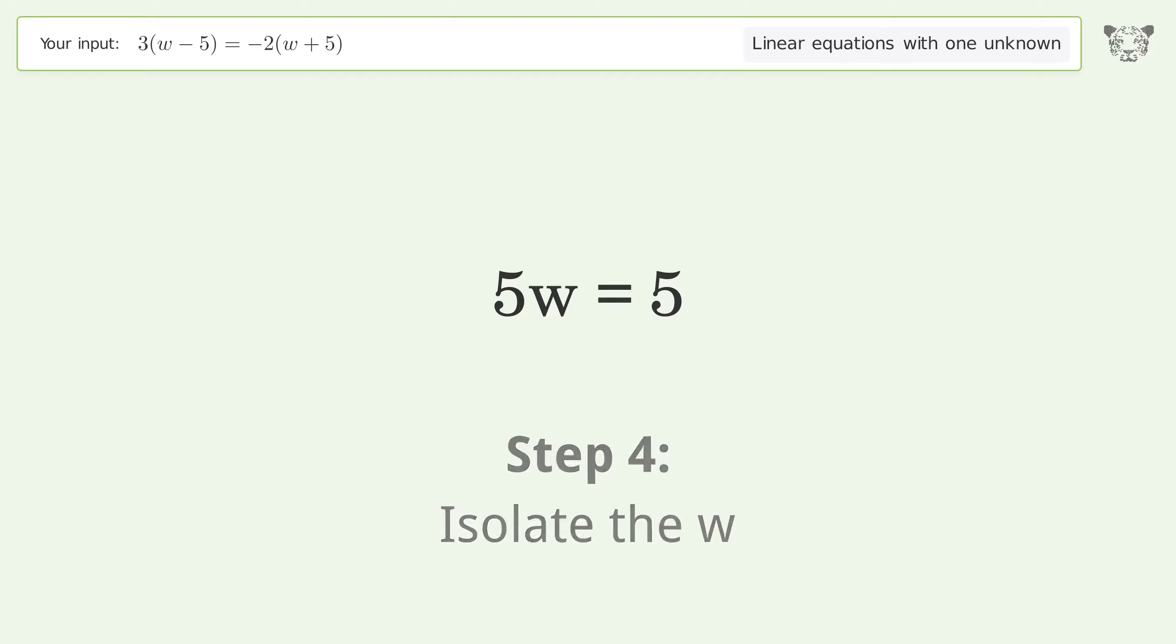Isolate the w by dividing both sides by 5, then simplify the fraction.